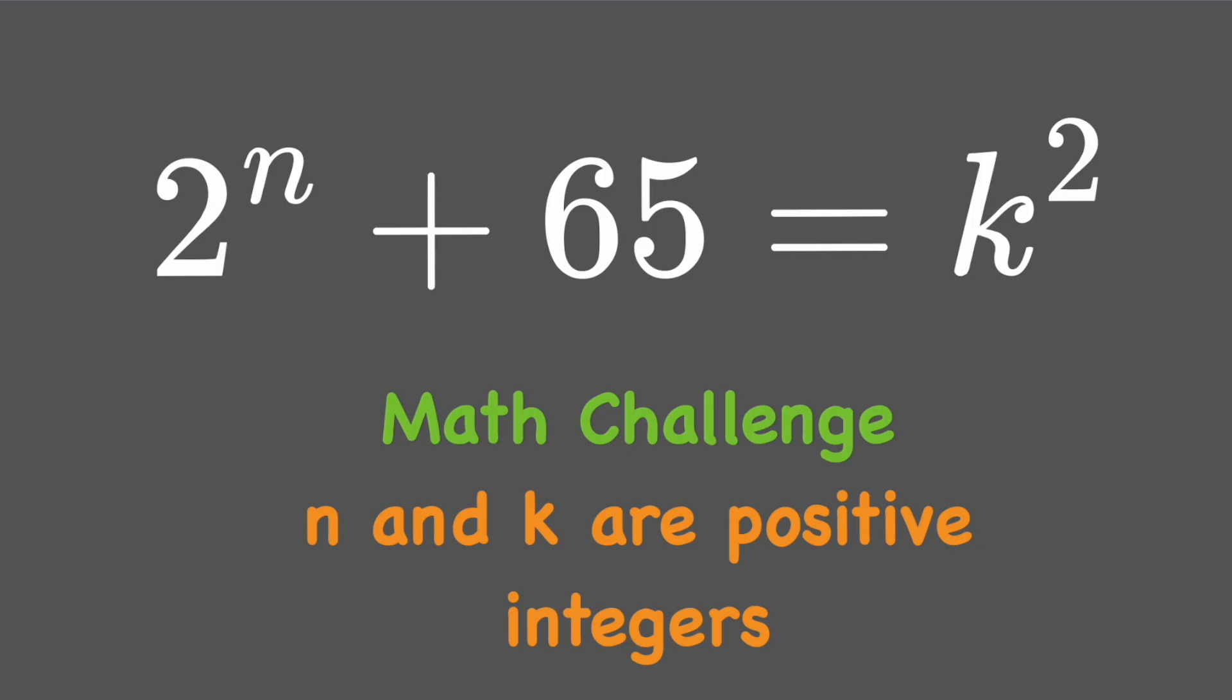Hi, welcome back. The problem today is about the Diophantine equation: 2^n + 65 = k^2, where n and k are positive integers. Now let's get started.